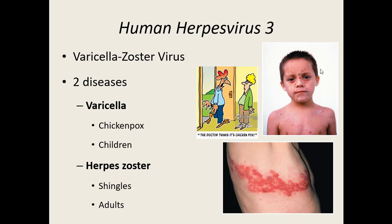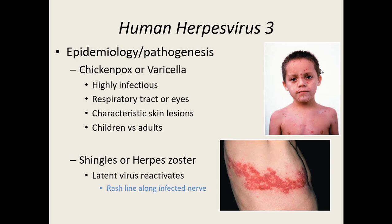How is chickenpox spread? The varicella virus is highly infectious. It generally spreads through the respiratory tract and by touching the eyes. Once it gets into the body, it gets into the bloodstream, travels throughout, and eventually develops into skin lesions — that itchy skin rash lasting about three to five days. Children generally don't suffer anything worse than itchy red skin lesions for three to five days.